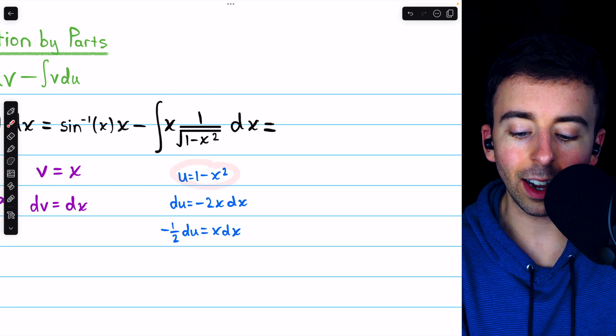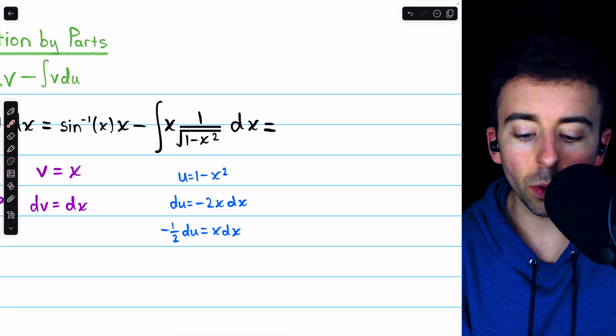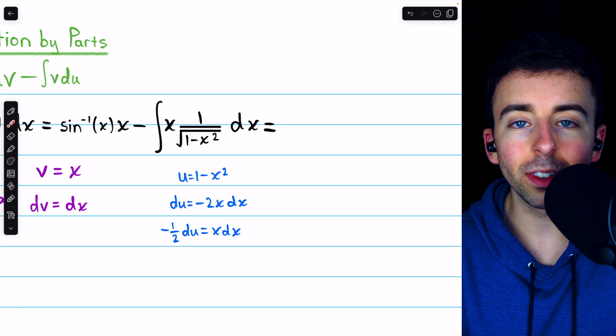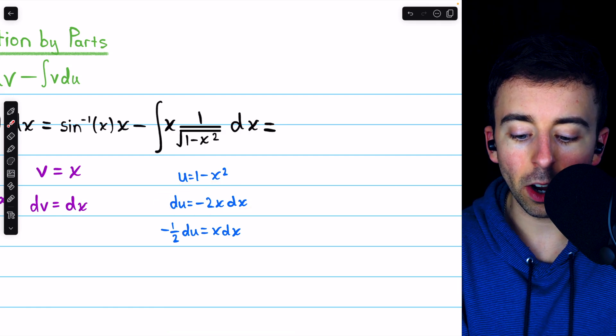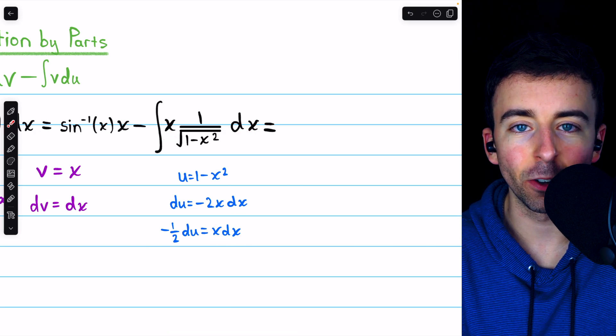Letting u equal 1 minus x squared, the thing inside the square root, we have that du equals negative 2x dx, and then we can divide both sides by negative 2, so that on the right, we get x dx, which matches up with our integrand.